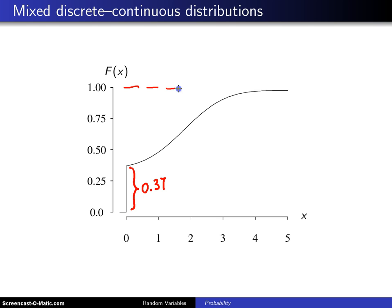That function right there is asymptotically approaching 1, and that is the cumulative distribution function for a mixed discrete continuous distribution, part discrete and part continuous.